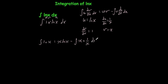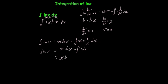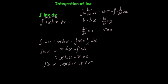That gives us the integral of natural log of x equals x·ln(x) minus the integral of — the x cancels with the 1/x — so you're left with 1 dx. Whenever you integrate that you get x·ln(x); the integral of 1 is x, plus C. So the answer is x·ln(x) minus x plus C.